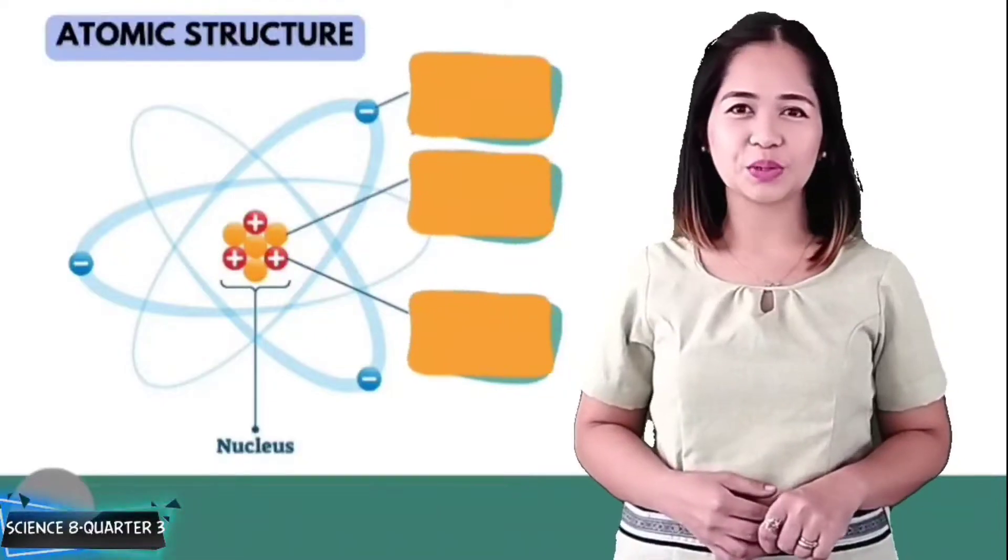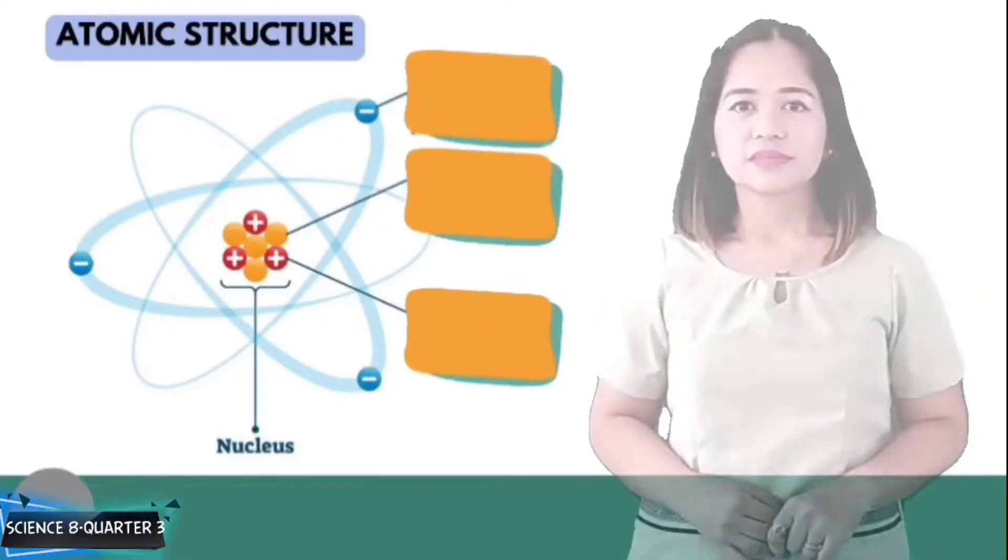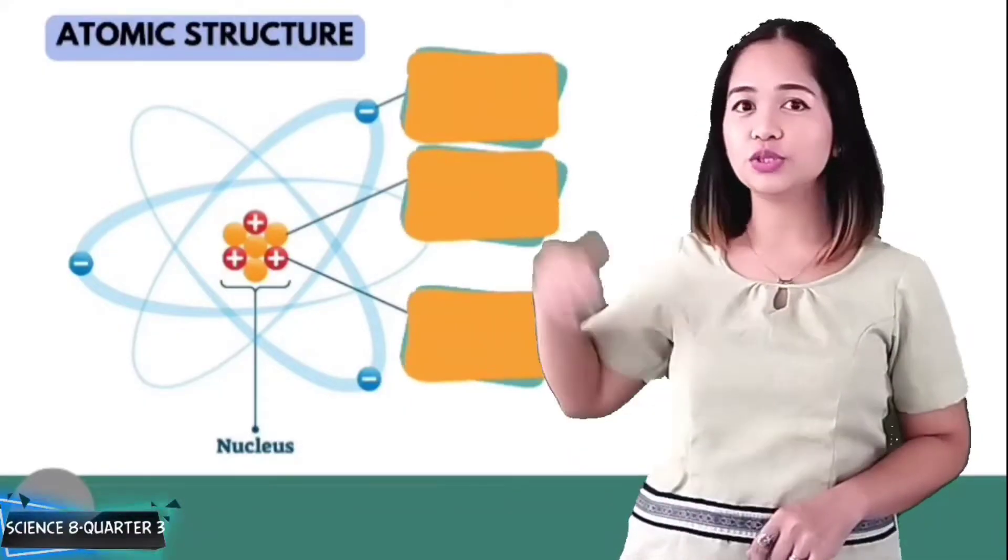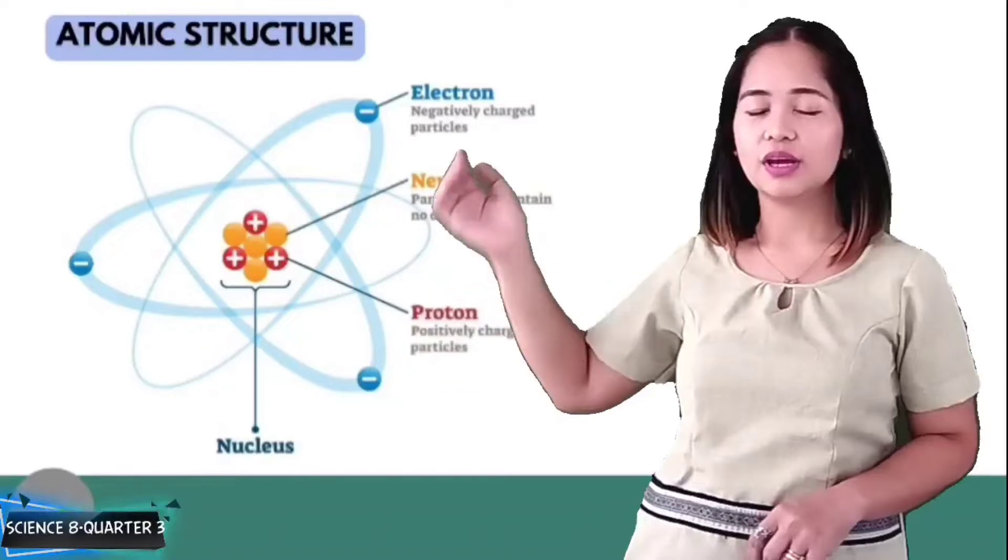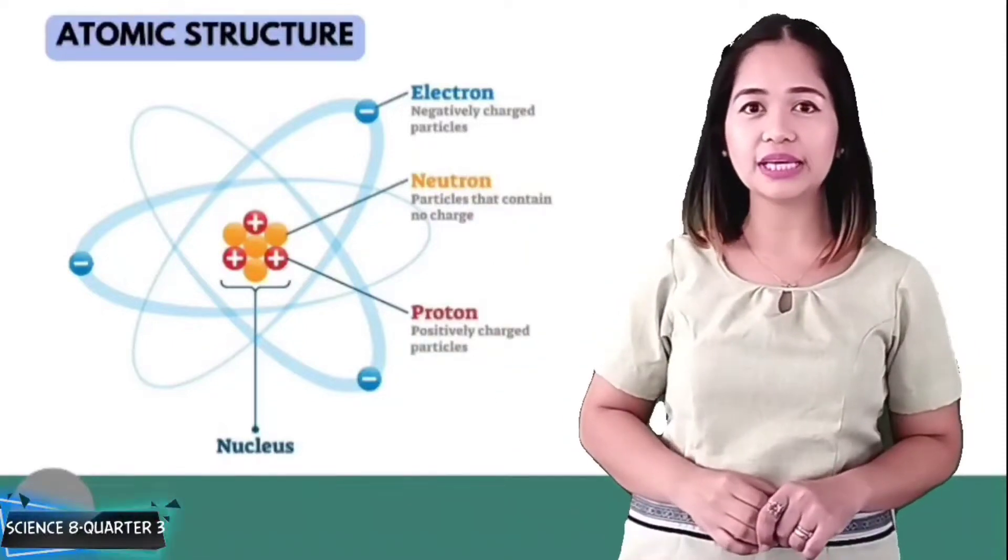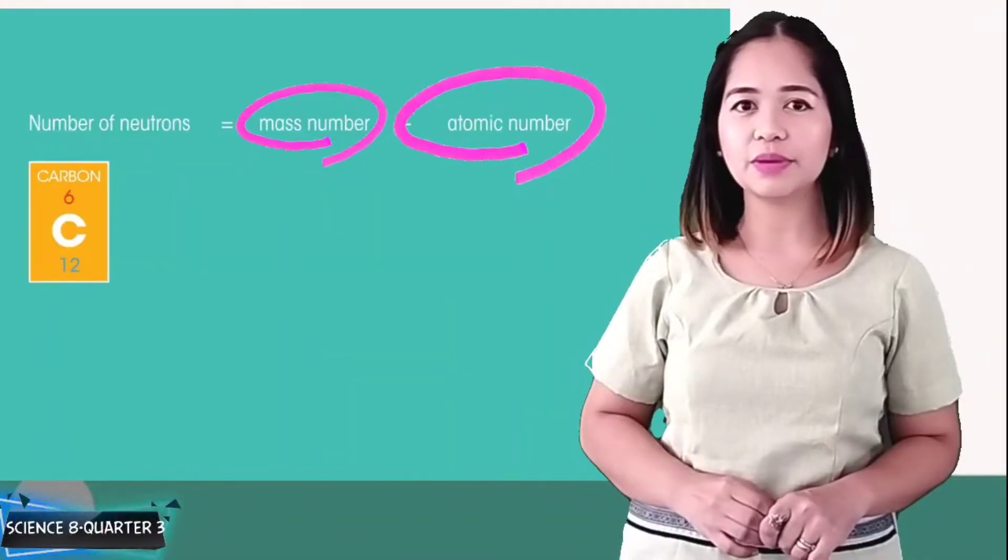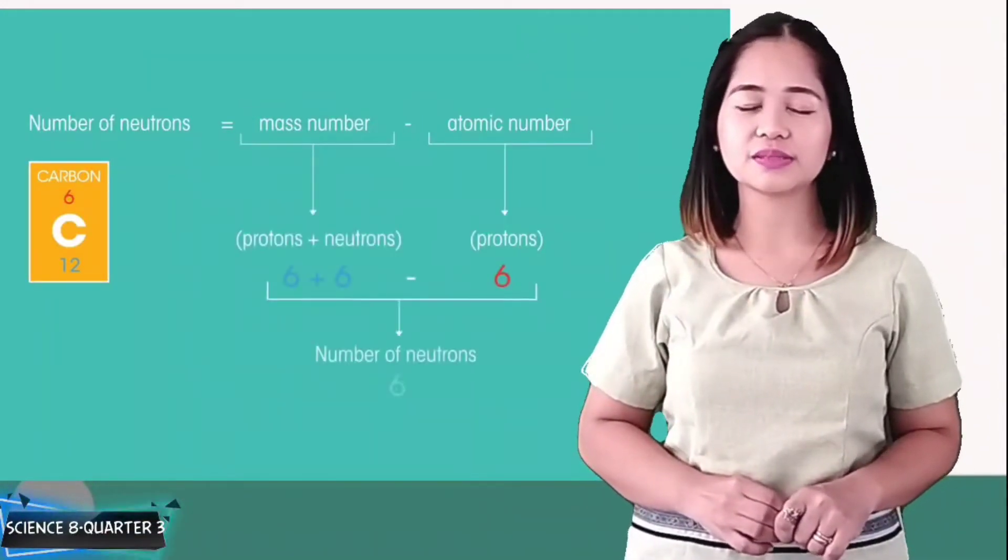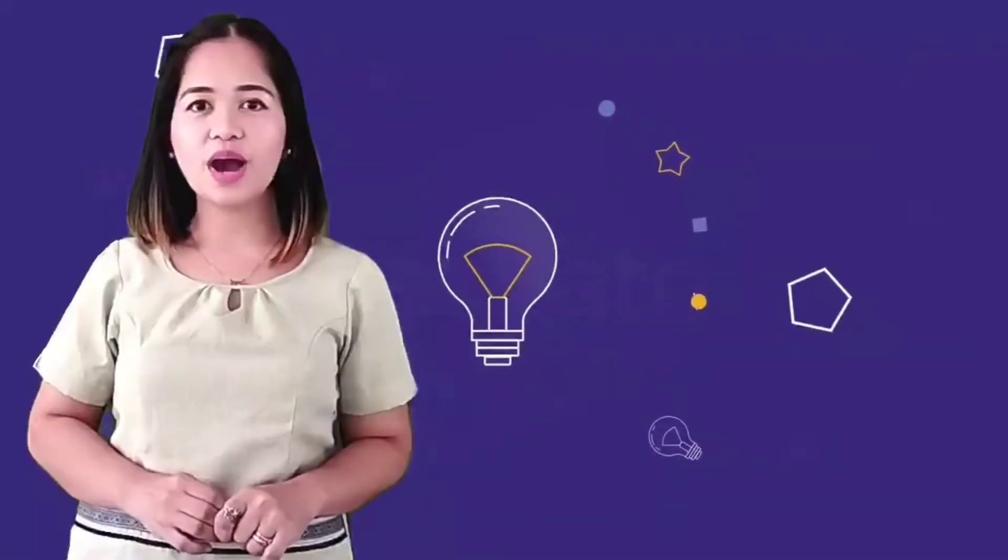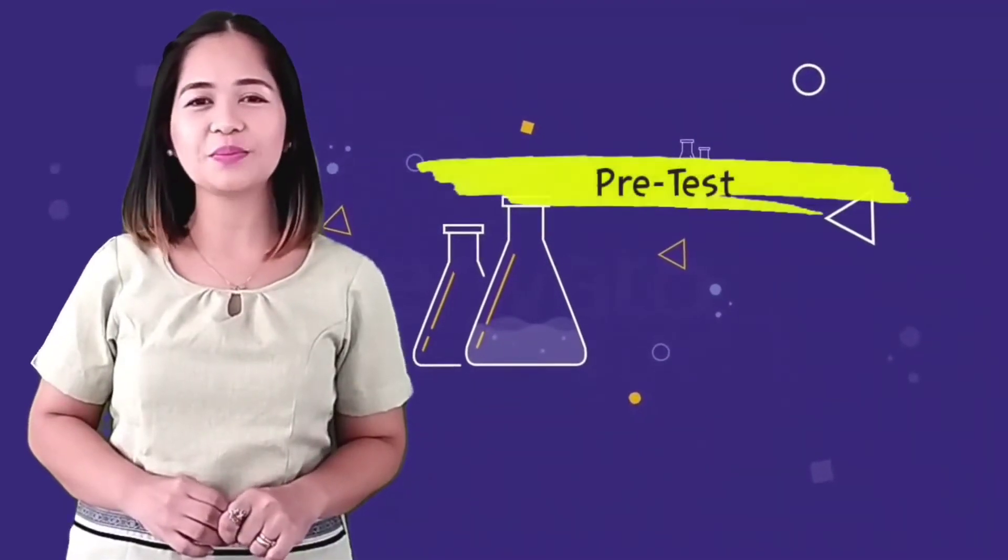In our previous episode, you learned atomic structures. In an atom, there are neutrons, electrons, and protons. Also, you determined the atomic mass and the atomic number of an element using the number of protons and neutrons. Now, as we proceed to our lesson, let us begin with a simple task.